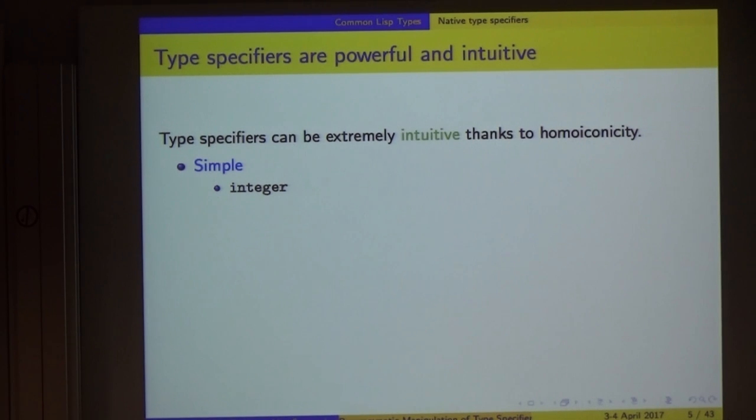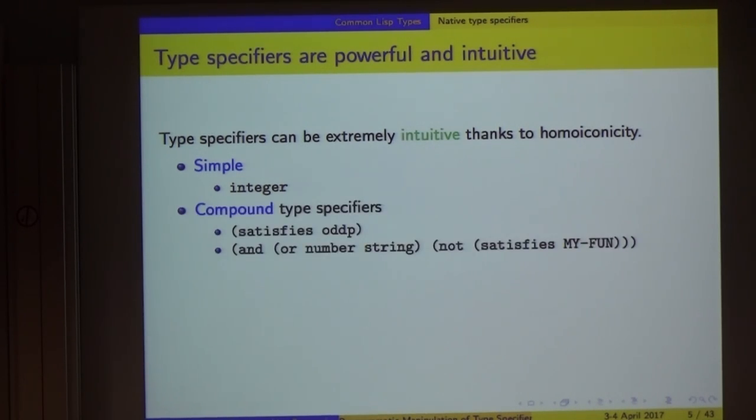Type specifiers, the meta-language or the DSL domain-specific language for describing types, is very intuitive and quite powerful. You can do a lot with it. What you see is what you get - that's what homoiconicity means. The symbol integer stands for the integer type. We have compound specifiers, such as the set of objects which if you call oddP, the function returns true. We can express Boolean relations between types with and, or, and not. A set of objects which are either a stream or a number and don't satisfy a function.